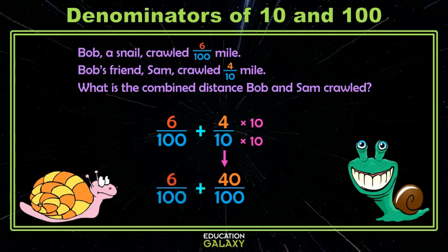This I know how to add. Forty plus six is forty-six. And ta-da! Sam and Bob together crawled forty-six hundredths mile.